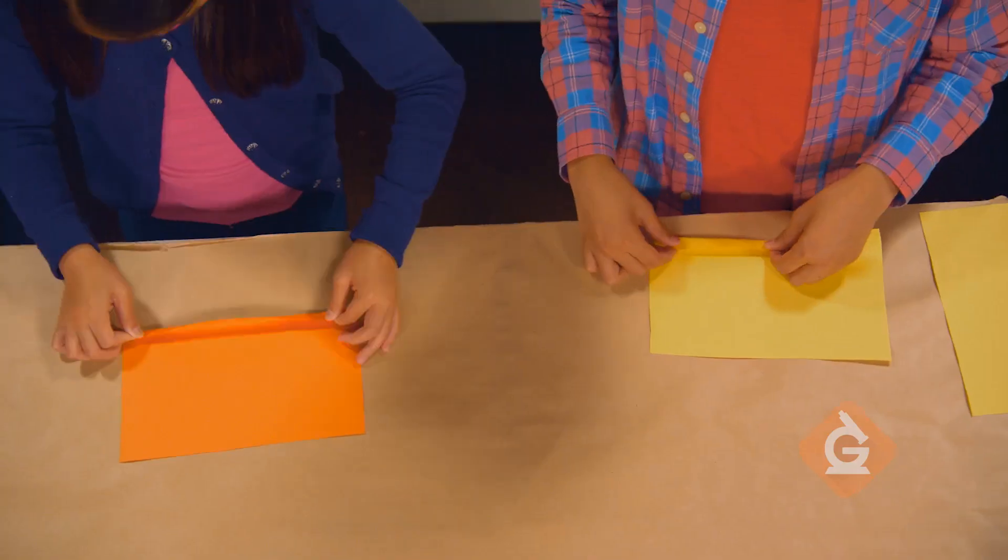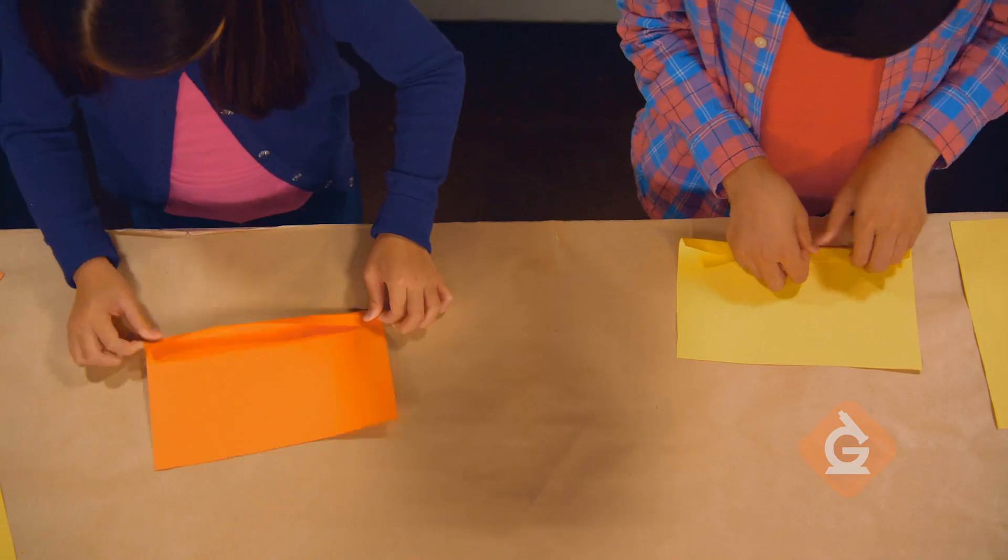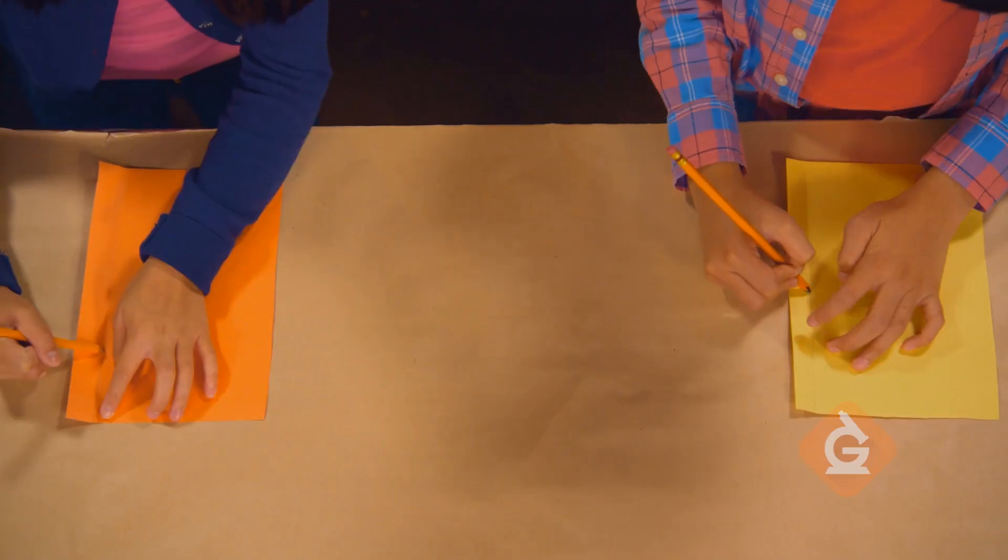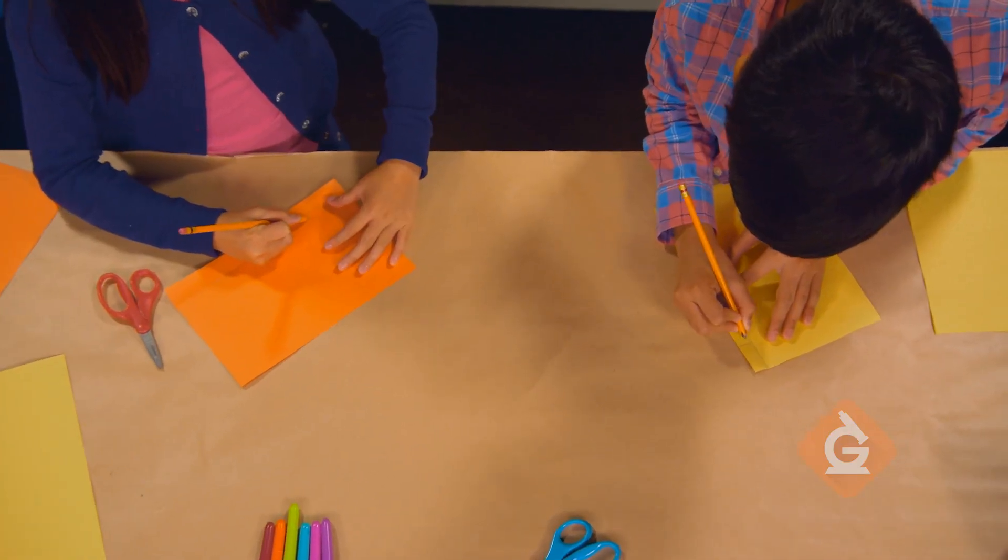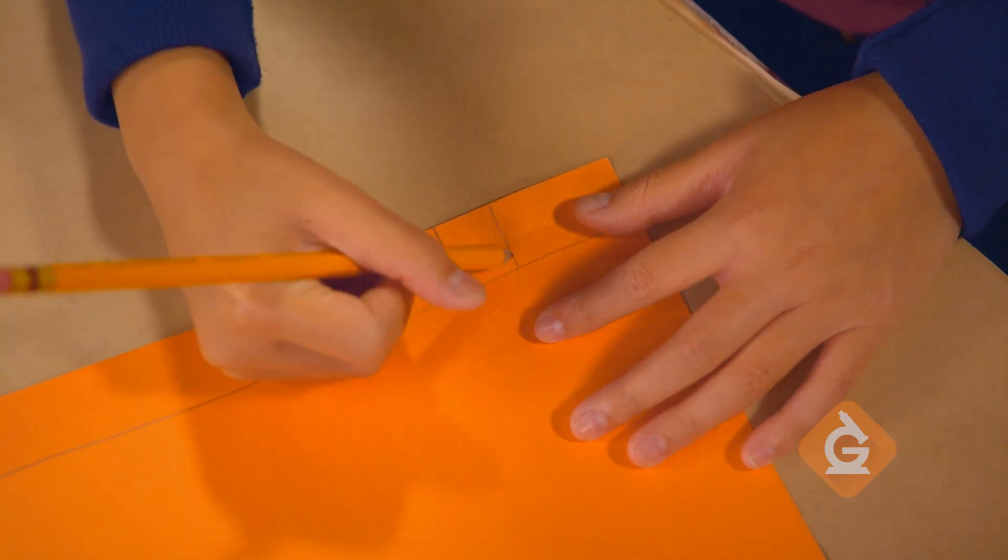Then, make a small fold on the edge of the paper and draw a line along the fold. Add two lines next to each other like this and cut it out.